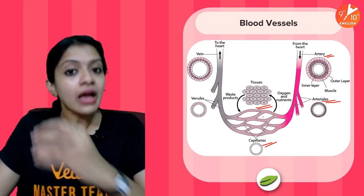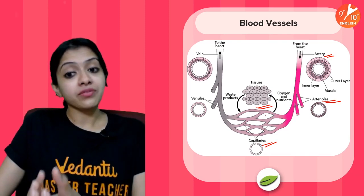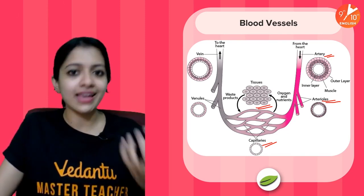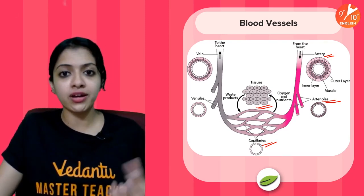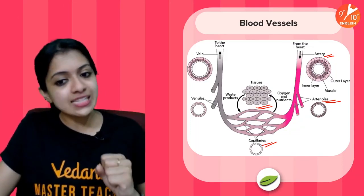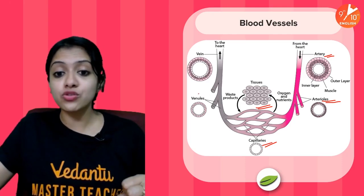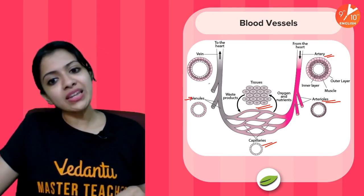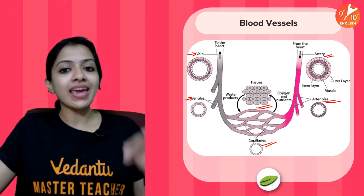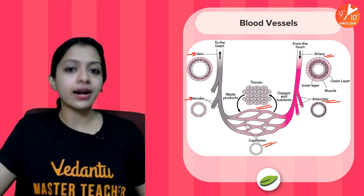Capillaries directly supply tissues and also pick up waste products — like carbon dioxide and other excretory products — from the cells. These capillaries combine together to form venules, venules combine together to form veins, and the veins empty all this deoxygenated blood back into your heart.